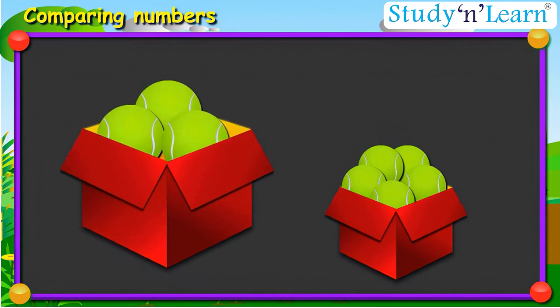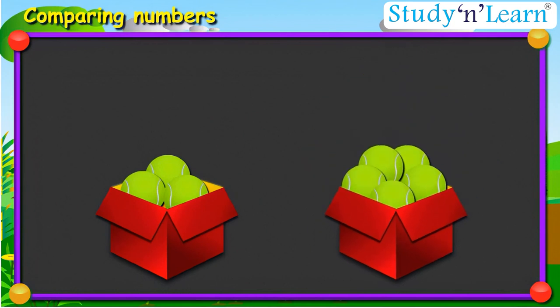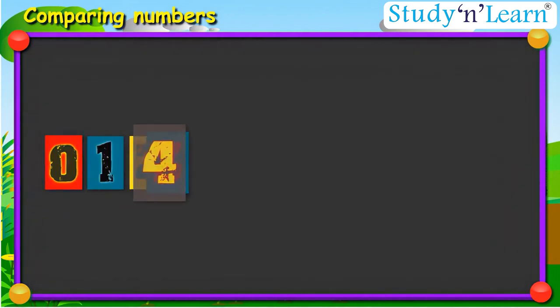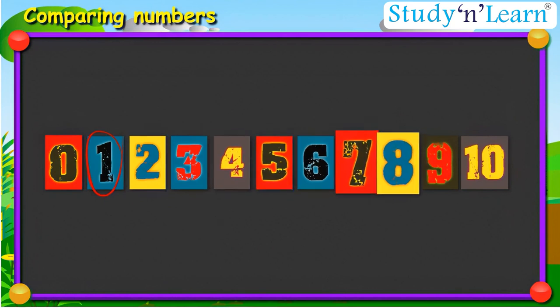Yes, the box on the left has less number of balls as compared to the box on the right. Now let us learn to find the smaller number with the help of the number strip. Children, this is a number strip. It is important to remember that while comparing two numbers, the number which is closer to zero on the number strip is smaller as compared to the other.